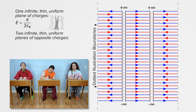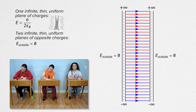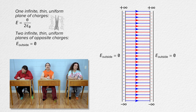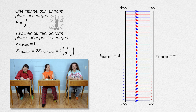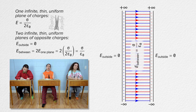Outside the two parallel oppositely charged planes, the electric fields are equal in magnitude but opposite in direction. Therefore, the electric field outside the two parallel planes of charge is zero. However, between the two parallel planes of charge, the two electric fields are in the same direction. Therefore, the electric field between the parallel plates is just two times the electric field of one plane of charges. Substituting in surface charge density over two times the permittivity of free space, we get that the electric field between the two parallel planes of charge with equal magnitude but opposite sign equals surface charge density over permittivity of free space.